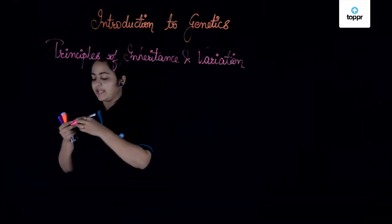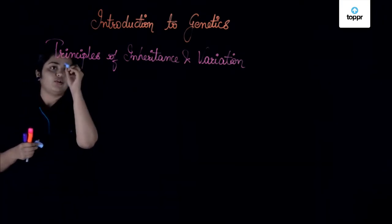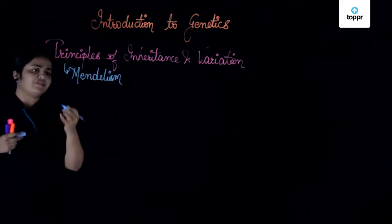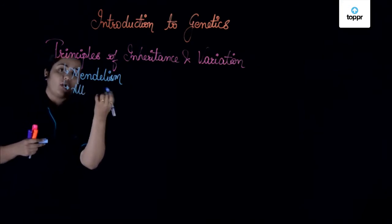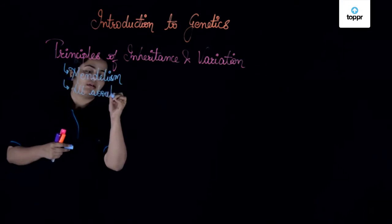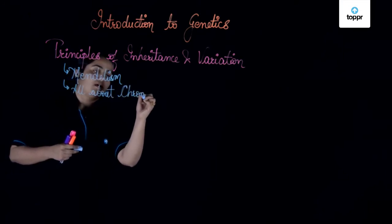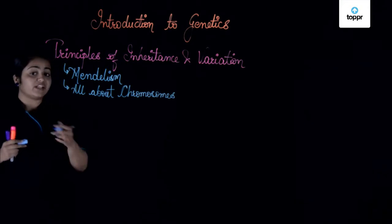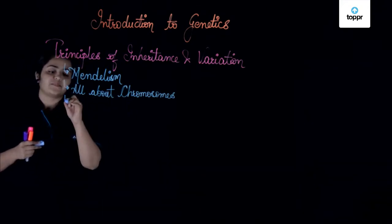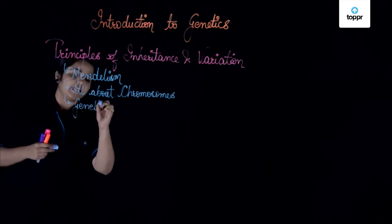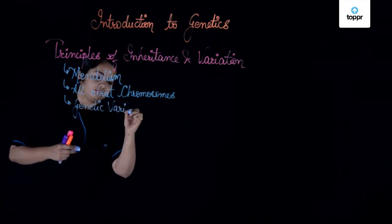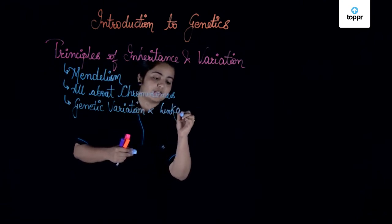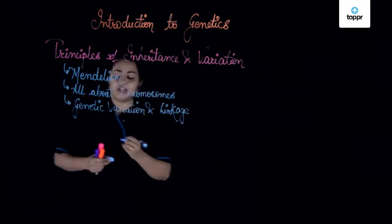In this complete concept, we'll be talking about a few sub-concepts which include concepts of Mendelism, that is Mendelian genetics. Apart from Mendelian genetics, we'll be talking about everything about chromosomes — their structures and everything in detail with respect to other organisms. Then we talk about the concept of genetic variation, which also gets us to the concept of linkage in the chromosomes — the concept of linkage and crossover in case of different chromosomes.